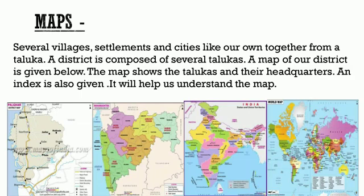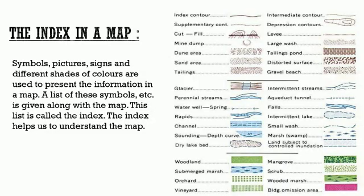There are many countries on the earth. Countries are made of several states. We live in the state of Maharashtra. India is made up of many states. Maps of your district, Maharashtra state, India and the world are given below. The map shows the talukas, the headquarters and an index which help us to understand the map. In a map, symbols, pictures, signs and different shades of color are used to present information. This list of symbols is called the index. The index helps us to understand the map.